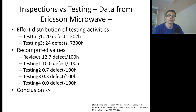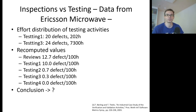There is even more data to this story. The paper reports that there are different types of testing done at Ericsson Microwave — in fact, four different types of testing activities. Looking at the effort distribution of those testing activities and the defects found reveals an interesting pattern. For example, we can see that testing 1 detects 20 defects using only 202 testing hours, whereas testing 3 finds 24 defects but uses 7300 hours.